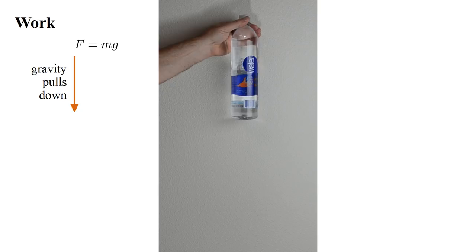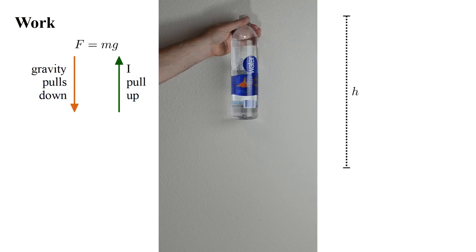Where m is the mass and g is the gravitational acceleration, about 9.8 meters per second squared. To overcome this I have to pull up with an equal force, and then exert this force through some distance h.